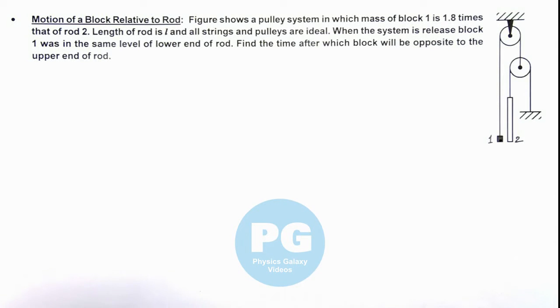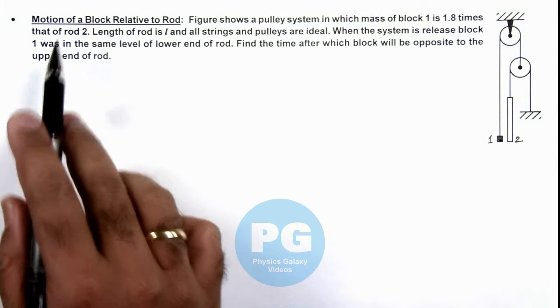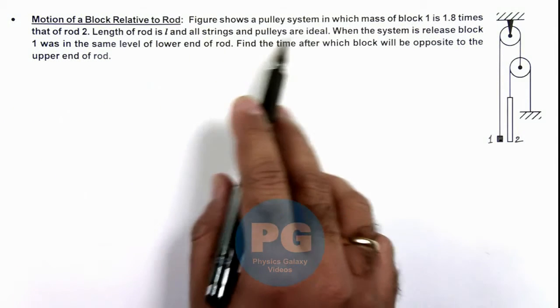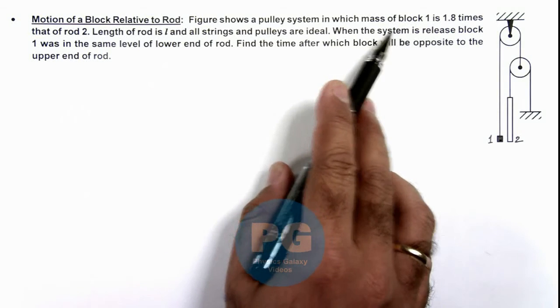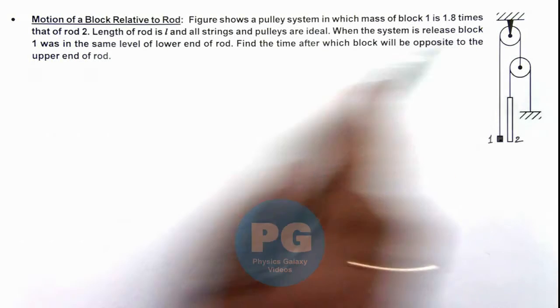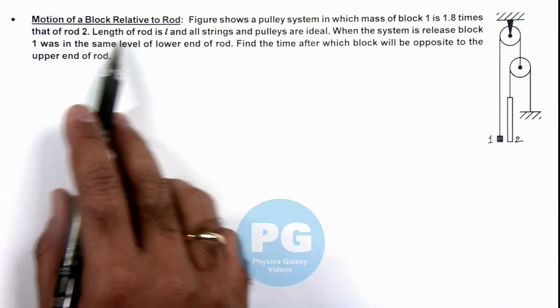This illustration is for analysis of motion of a block relative to a rod. Here the figure shows a pulley system in which block 1 is 1.8 times that of rod 2 - its mass is 1.8 times that of rod 2, and length of rod is l.